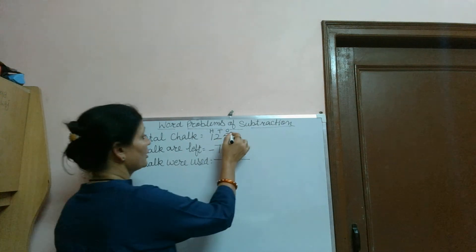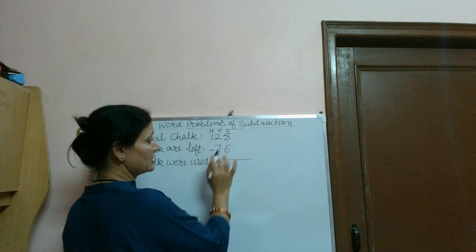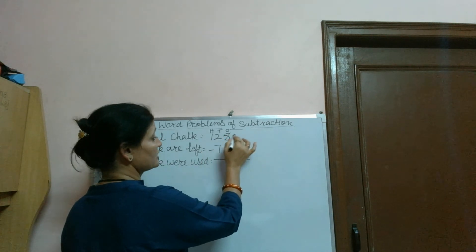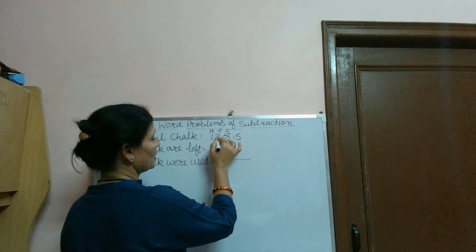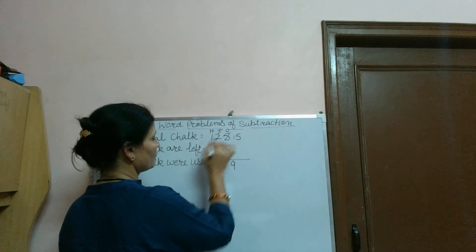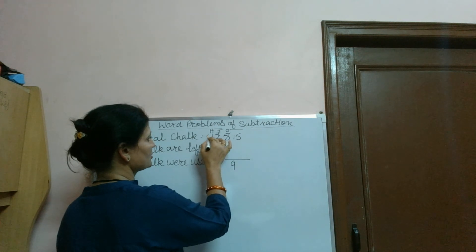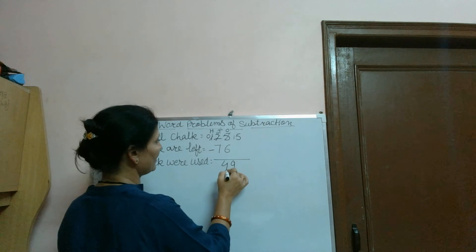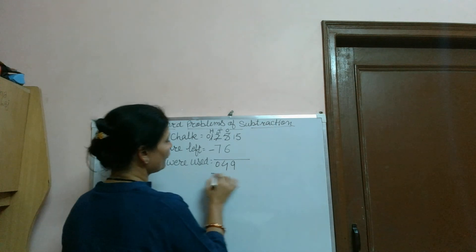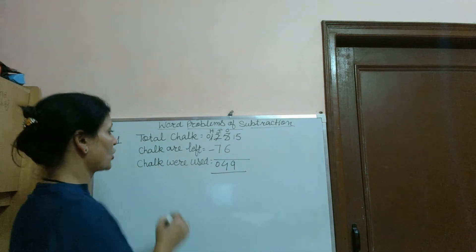5 is smaller than 6 below, so we will take 10 from the tens. 15 is here and below the tens, 1 is left. 15 minus 6 is 9. Then 1 is less than 7, so we take again: 11 will be here and 0 below the hundreds. 11 minus 4 is 7. So 49 chalk were used from the chalk box.